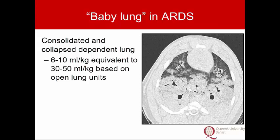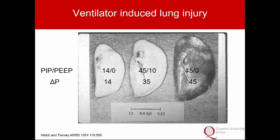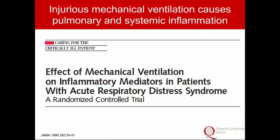Ventilator-induced lung injury is absolutely real — this goes back to the 1970s with the elegant work from Webb and Tierney showing that high pressures and high volumes cause increasing injury in animal models. In humans, Ranieri and colleagues randomised 37 patients to either a conventional protective strategy based on a pressure-volume curve or a non-protective strategy optimising oxygenation and CO2. Within 36 hours, injurious ventilation drove pulmonary and systemic inflammation — the first mechanistic data in humans showing that ventilation is genuinely harmful.